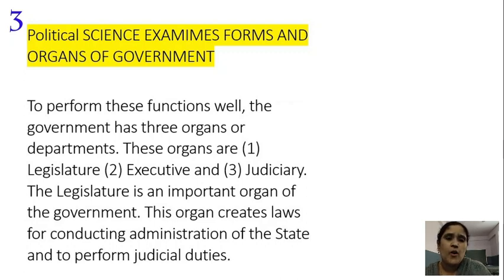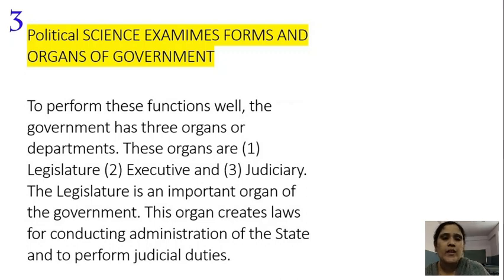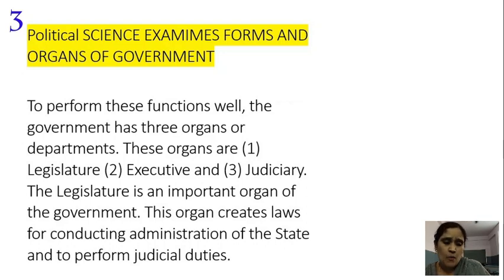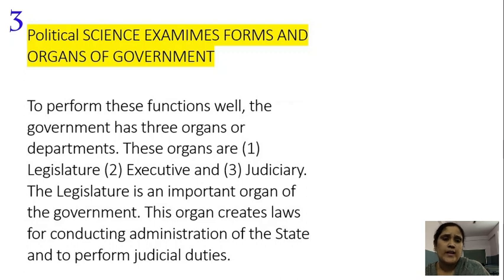Political science explains the detail about the government and the administration — how powers are divided between the center and the state, what the organs of the government are, how they perform their duties, and how laws are enacted. A law becomes popular when it is supported by the citizens. If citizens participate in political activities, then an ideal state or ideal country will come into existence.